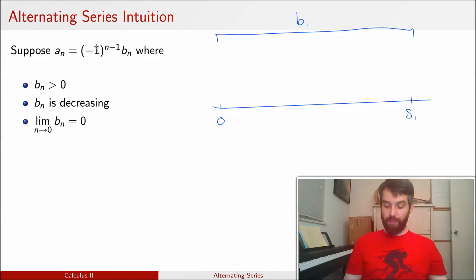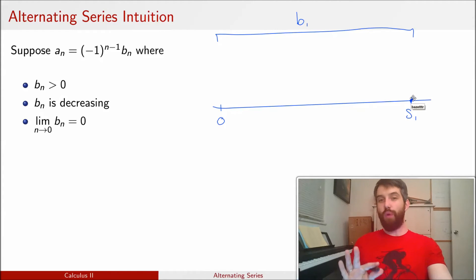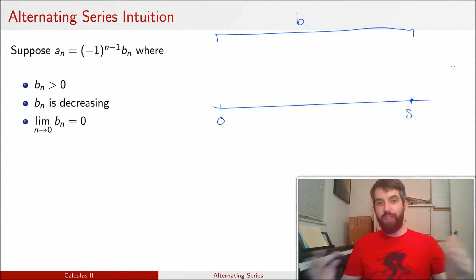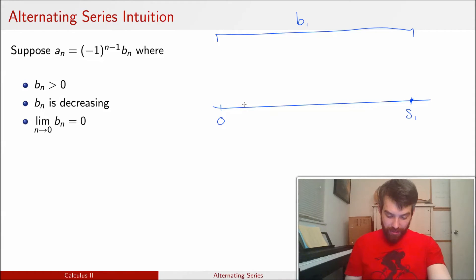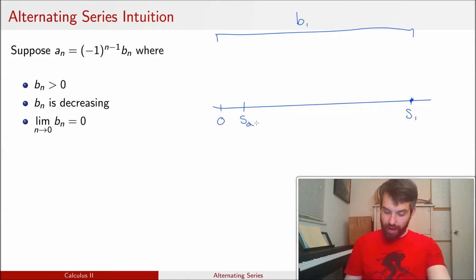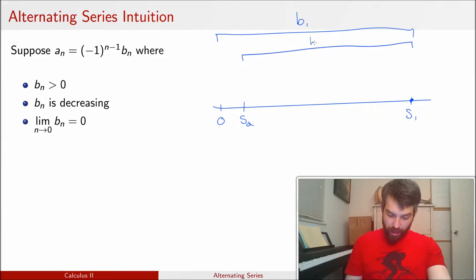Now let's see what happens to s2. For s2, I am subtracting off a term — however, I'm subtracting off a term that is smaller than b1. So s2 lands somewhere between 0 and s1, because b2 is smaller than b1. It doesn't go beyond 0; it subtracts off, landing somewhere in this region. That gap is b2. Then for s3, I'm adding something positive, but not as big as b2 since the b_n's are decreasing, giving me a point s3 with gap b3.